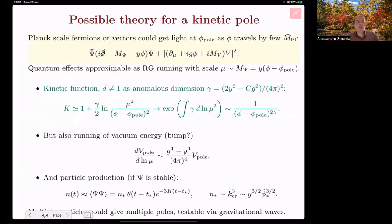Finally, I conclude discussing a possible theory for a kinetic pole. The idea is that particles that are around the Planck scale, like fermions or vectors, could have a mass that depends on the inflaton and could get light, massless, at some specific value of the inflaton vacuum expectation value because in large field inflation the inflaton travels by a few Planck masses. Then the quantum effects due to these particles with Yukawa or gauge couplings become big because quantum effects can be approximated by the usual renormalization group running, putting the renormalization scale around the mass of the particle that gets very light, in order to avoid large logarithms.